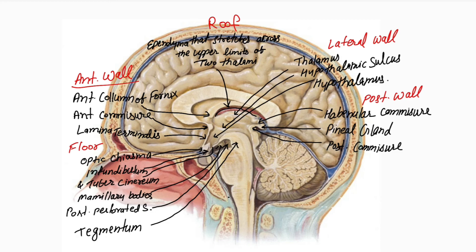To summarize: the anterior wall is formed by the anterior column of the fornix, anterior commissure, and lamina terminalis. The floor is formed by the optic chiasma, infundibulum with tuber cinereum, mammillary bodies, posterior perforated substance, and tegmentum. The posterior wall is formed by the habenular commissure, pineal gland, posterior commissure, and cerebral aqueduct. The lateral wall is formed by the thalamus, hypothalamic sulcus, and hypothalamus. The roof is formed by the ependyma stretching across the upper limits of the two thalami.